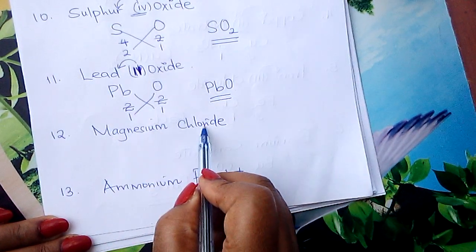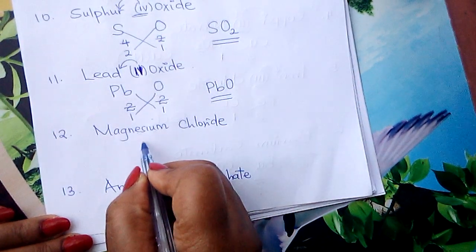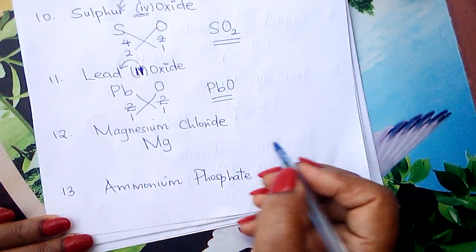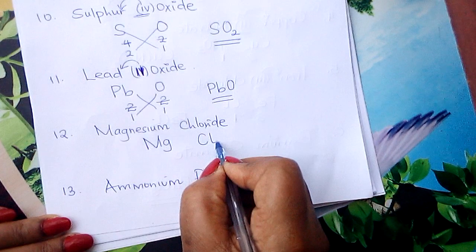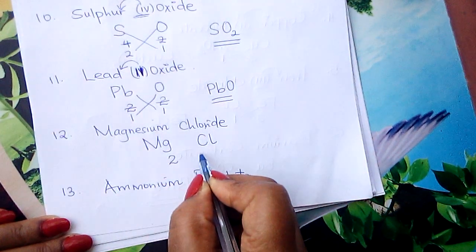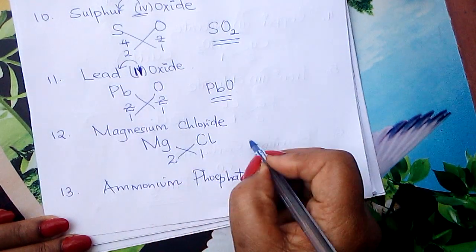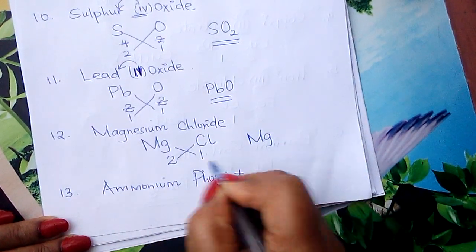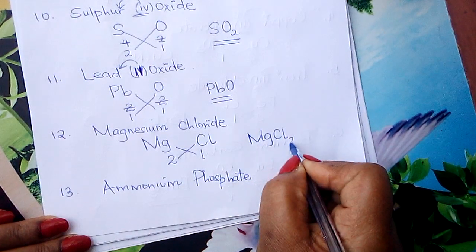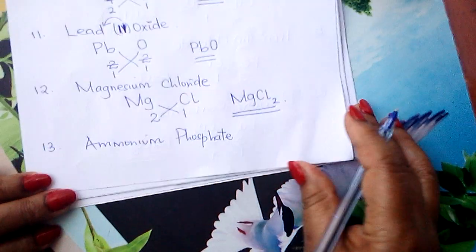Magnesium chloride is a compound of magnesium and chlorine. Magnesium symbol is Mg, chlorine is Cl. Magnesium valency is 2, chlorine valency is 1. Interchange: Mg takes 1, Cl element takes 2. That is the formula of magnesium chloride: MgCl₂.